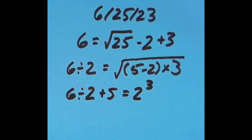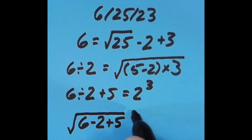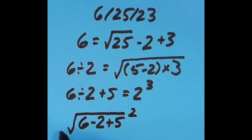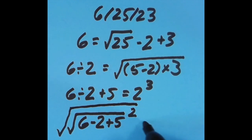And then with the equal sign all the way to the right, I did this: 6 minus 2 to get 4, plus 5 to get 9. Let's take the square root of 9 to get 3 and square that 3 to get back to 9, and then take the square root of that 9 to get back to 3. So that just equals 3.